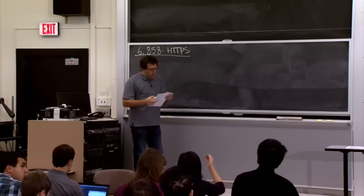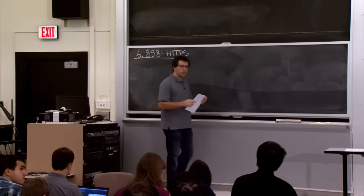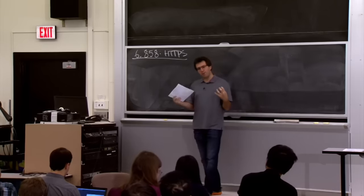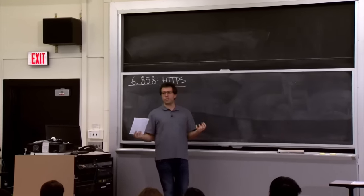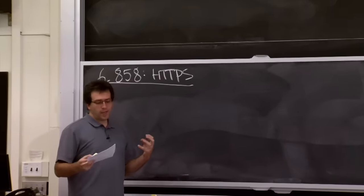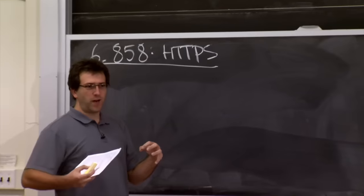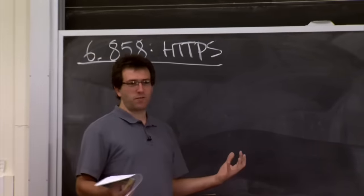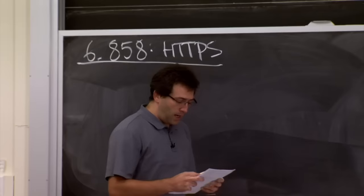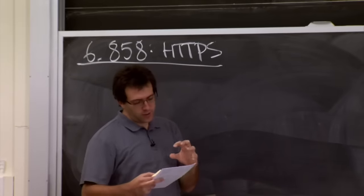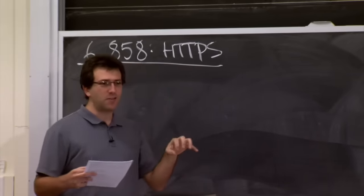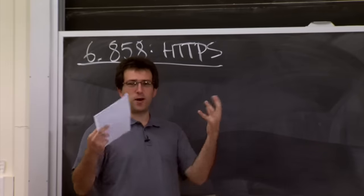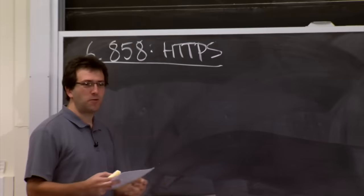Today we're going to talk about how the web uses cryptography to protect network communication. We'll look at two closely related topics: how to cryptographically protect network communication at a larger scale than the Kerberos system from last lecture, and how to integrate this cryptographic protection from the network level into the entire application. Protecting network communication is relatively easy — cryptography mostly just works — but integrating it correctly at the higher level in the browser is the much trickier part.